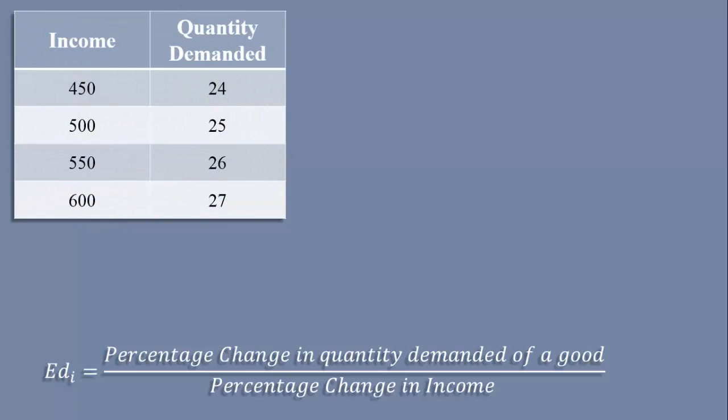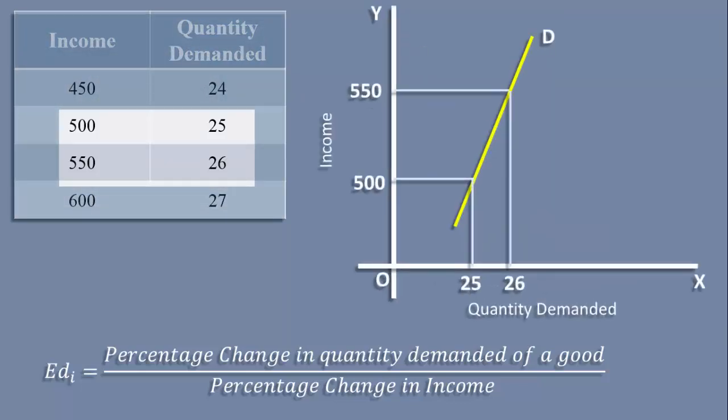This is yet another income demand schedule. Here also, income and demand are moving in the same direction; the relation is positive. In this case, when income moves up from 500 to 550 rupees, quantity increases from 25 units to 26 units.